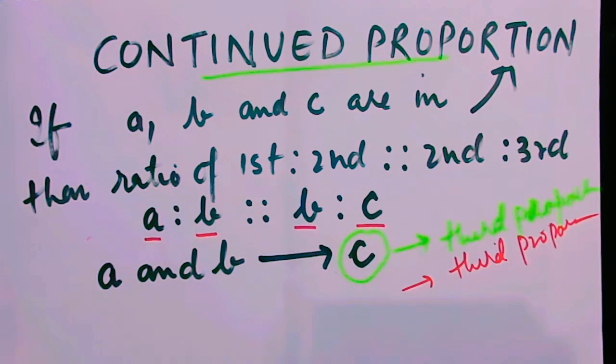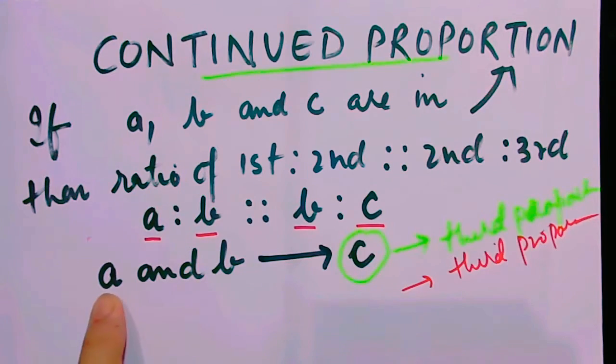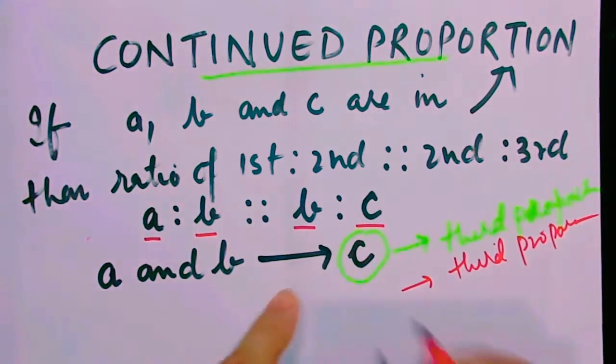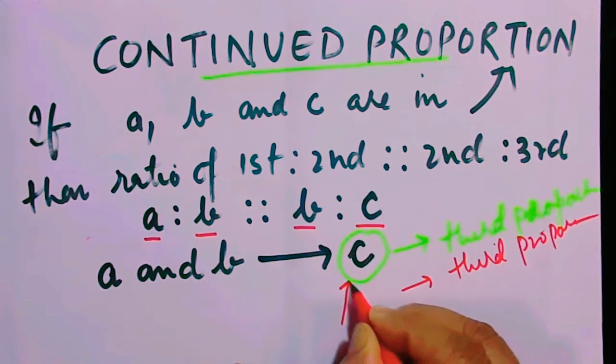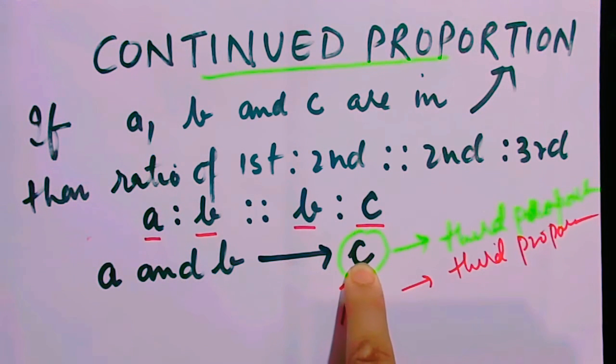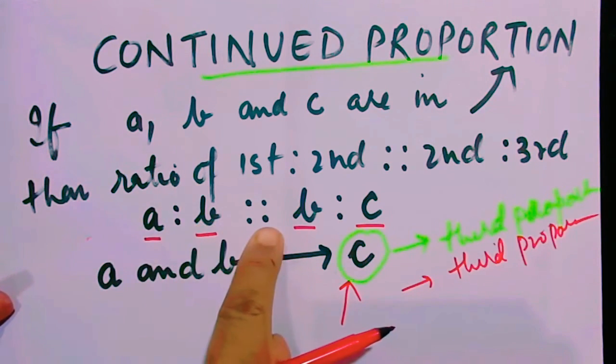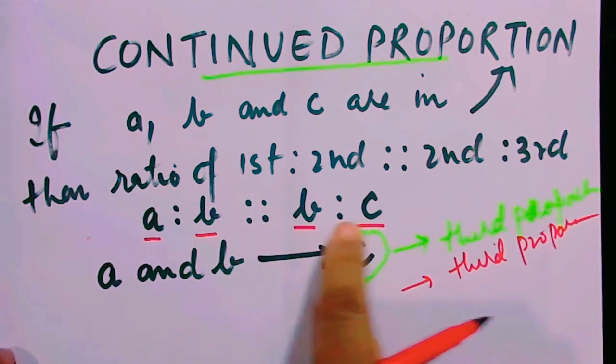This means if a and b are given and they say that they are in continued proportion, you can take a third value c and apply a is to b in proportion to b is to c. This is very important before we start.